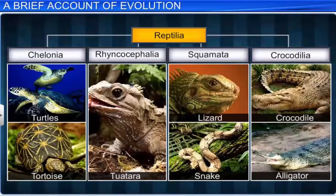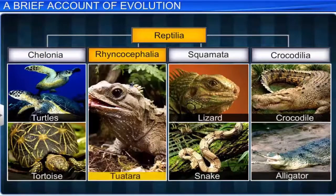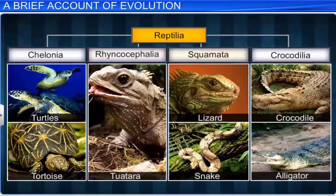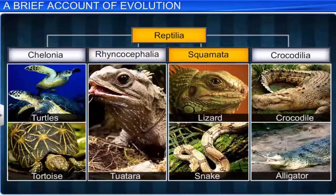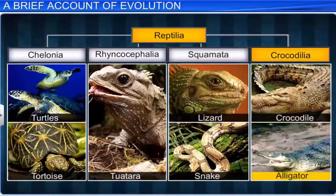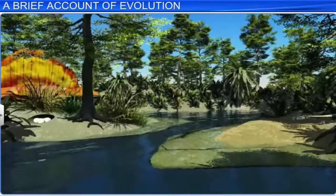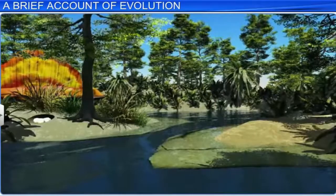Today, there are four orders of class Reptilia. The first order is Chelonia, which includes turtles and tortoises. The second order, Rhynchocephalia, includes Tuatara. The third order, Squamata, includes lizards and snakes. While the fourth order, Crocodilia, includes crocodiles and alligators. Meanwhile, the plants that existed during the Permian age were ferns.